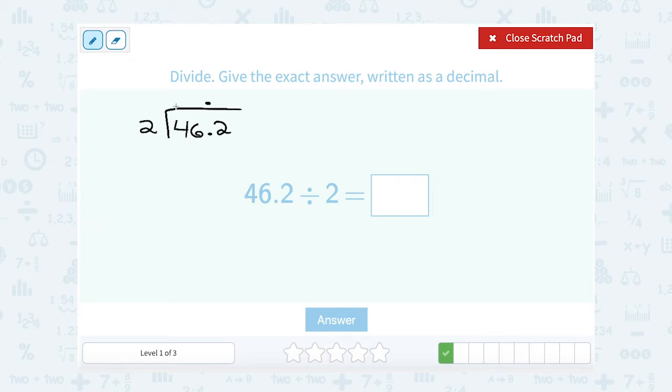2 goes into 4 two times, 2 times 2 is 4, so that gives me 0 remainder. Next, I would bring down my 6. 2 goes into 6 three times, 3 times 2 is 6, so again, that would give me 0 remainder. And then finally, I would have to bring down that 2, and 2 goes into 2 one time. Now notice, since we put the decimal point there already, we know that it's going to be 23.1.